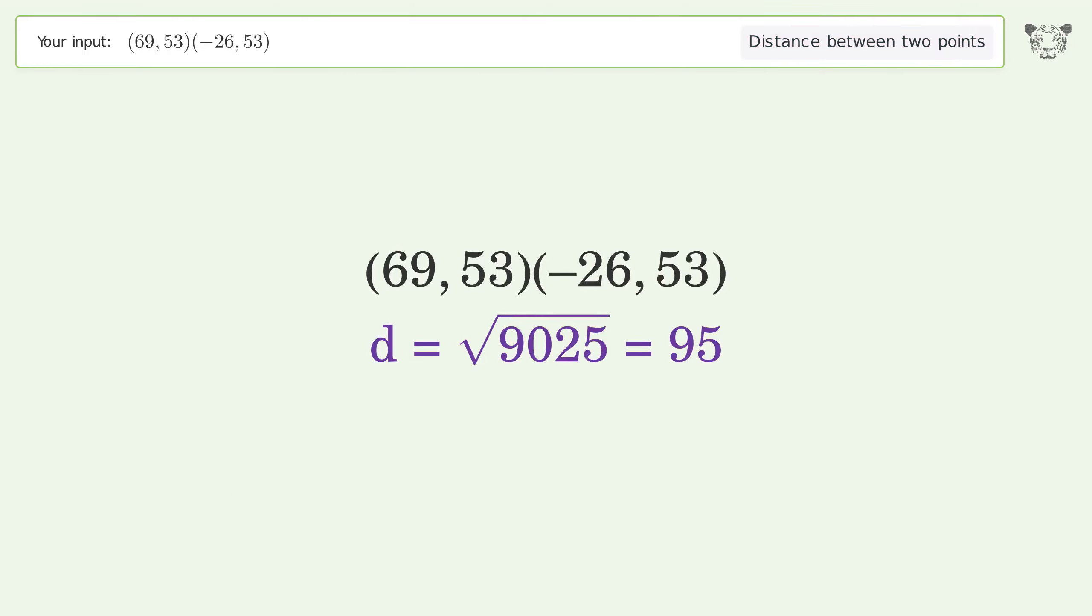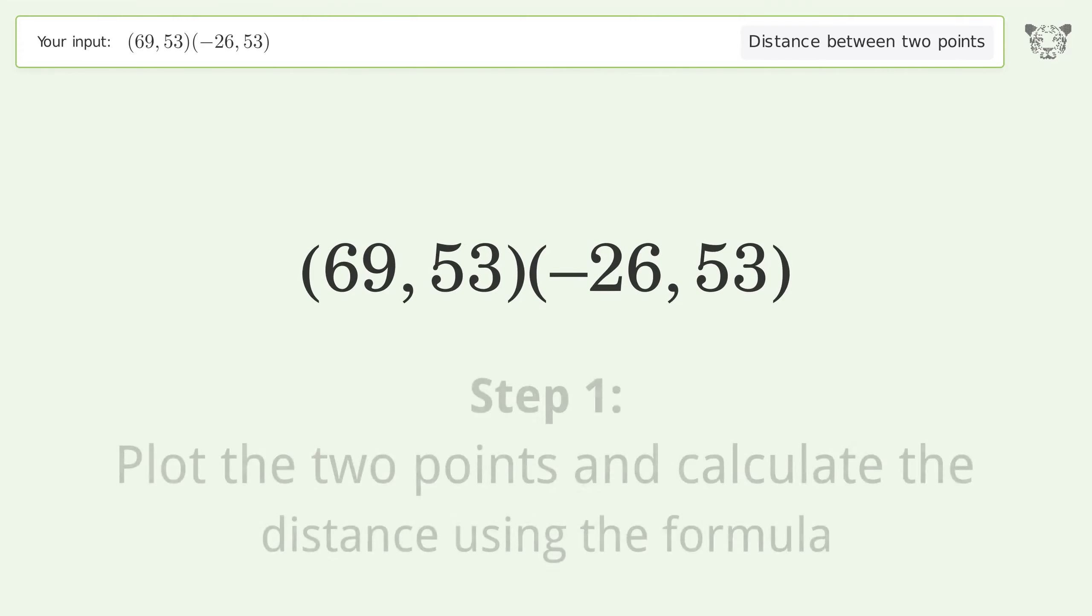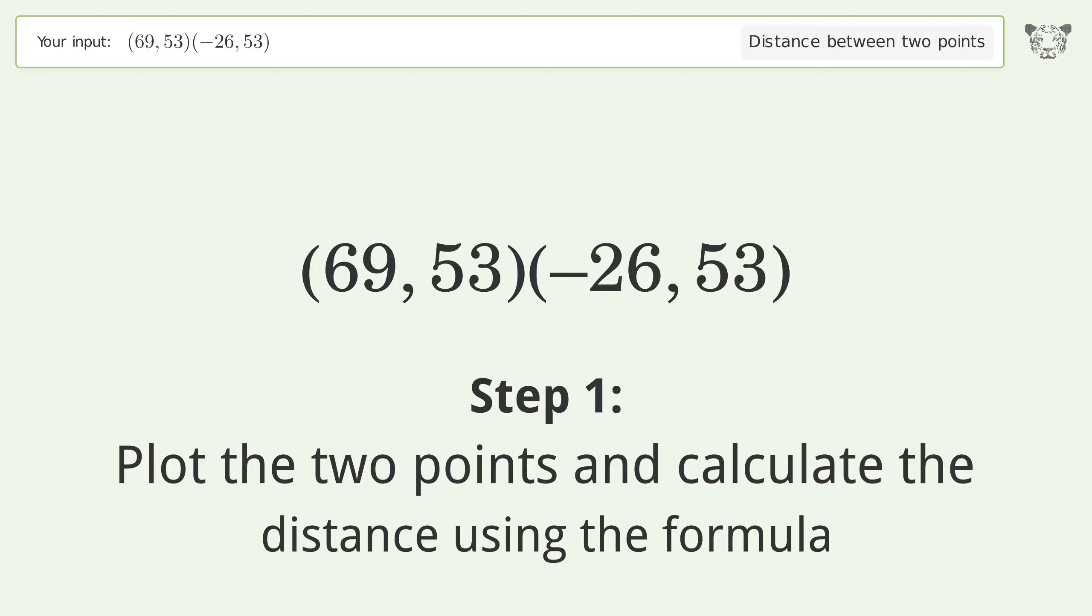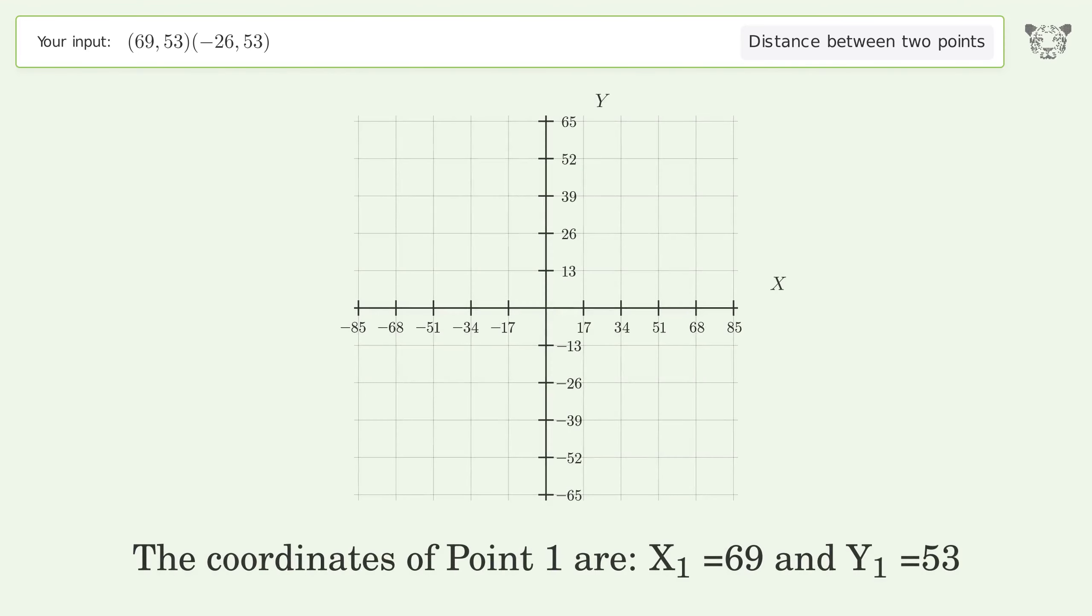You asked Tiger to calculate the distance between two points. The distance between the two points is the square root of 9025 or 95. Let's solve it step by step. Plot the two points and calculate the distance using the formula.